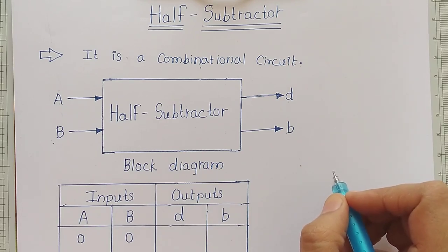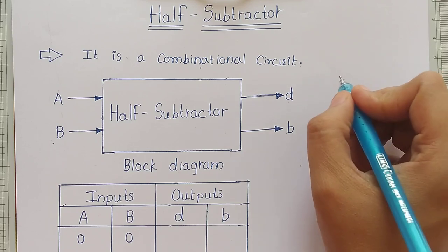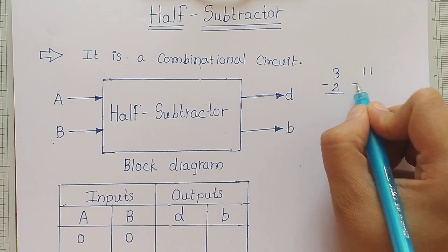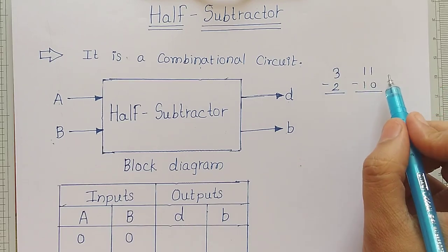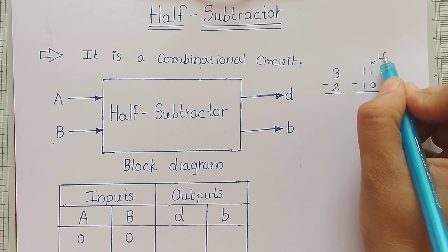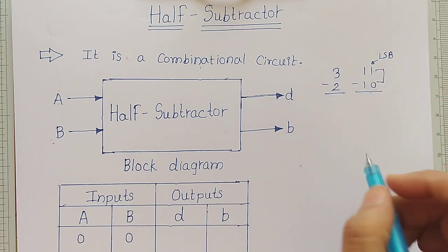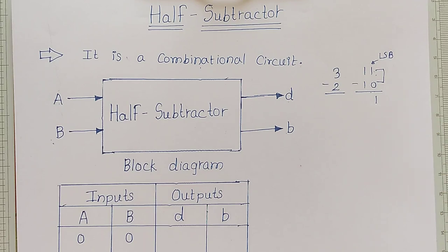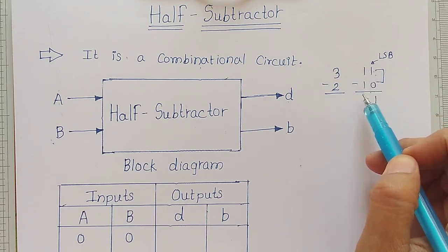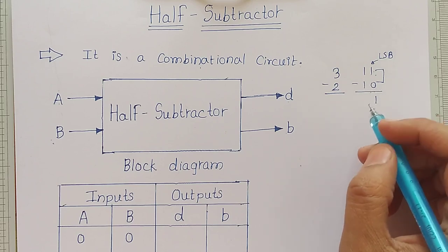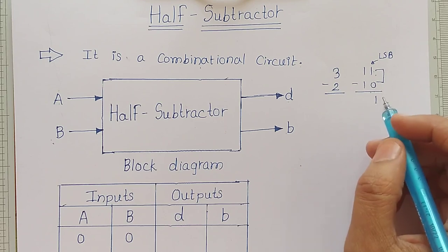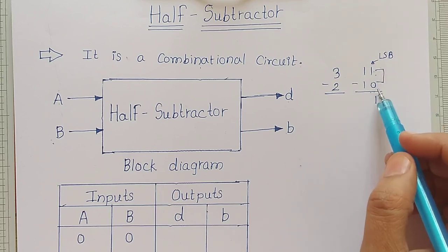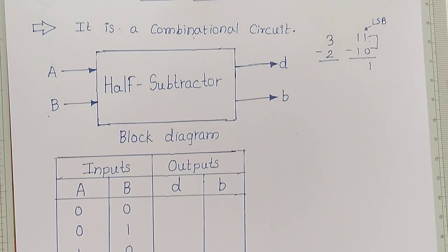To understand how the half subtractor works, consider an example: suppose we want to subtract two from three. In decimal that is 3 minus 2, and in binary it will be 11 minus 10. The job of the half subtractor is to subtract the LSB bits — so it performs 1 minus 0 equals 1. For the MSB bits, a full subtractor is required because a borrow may be present, making it a three-bit operation. So the half subtractor is used only to subtract the LSB bits.